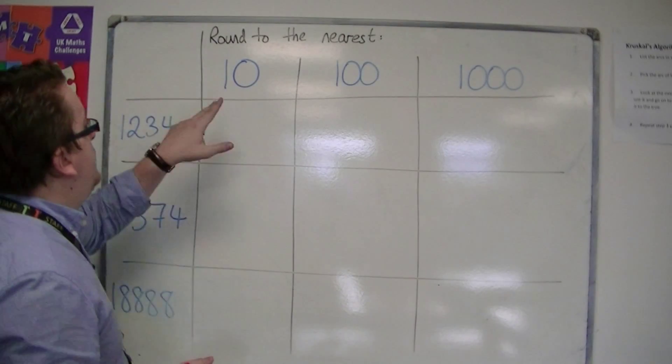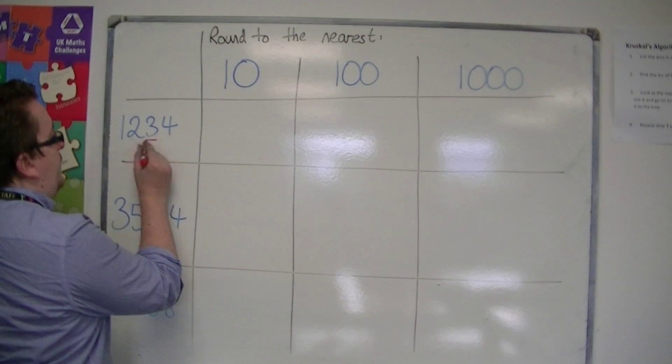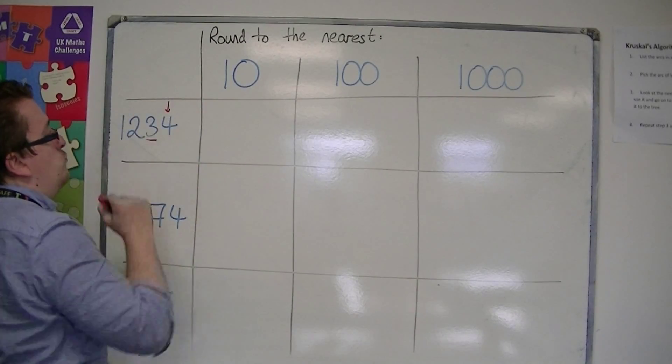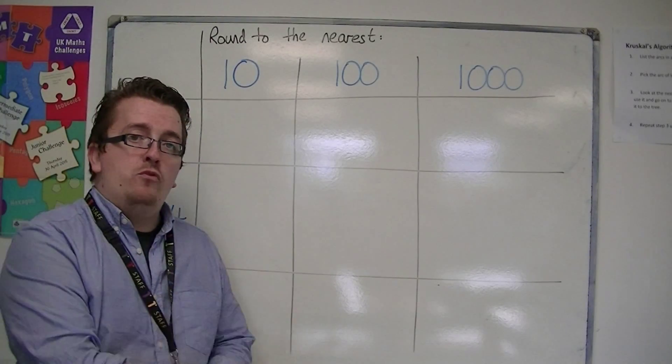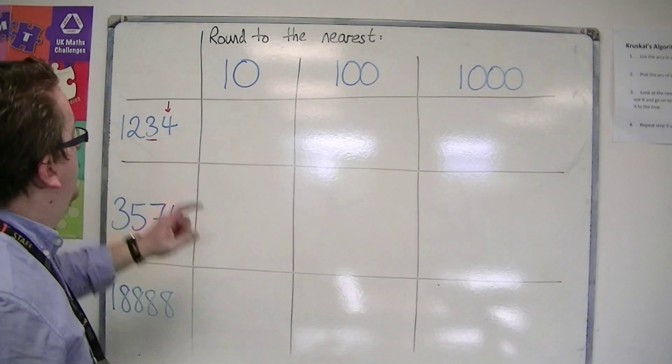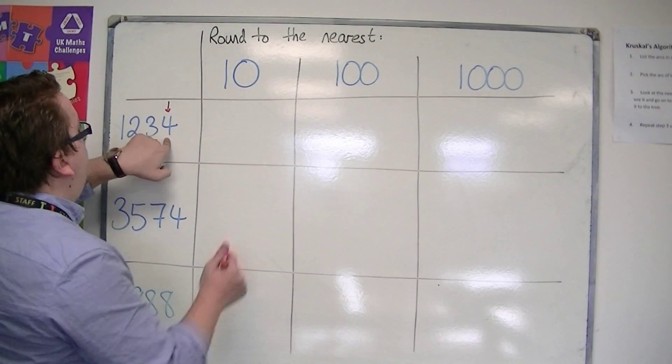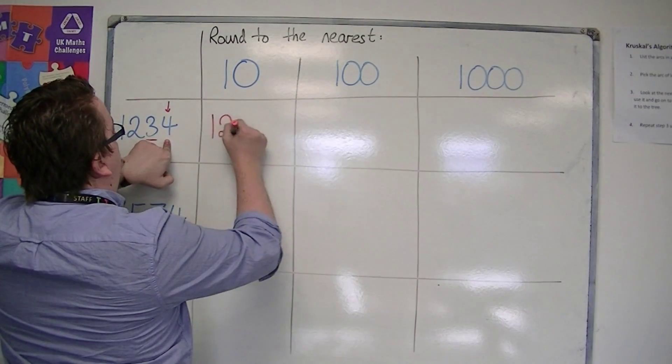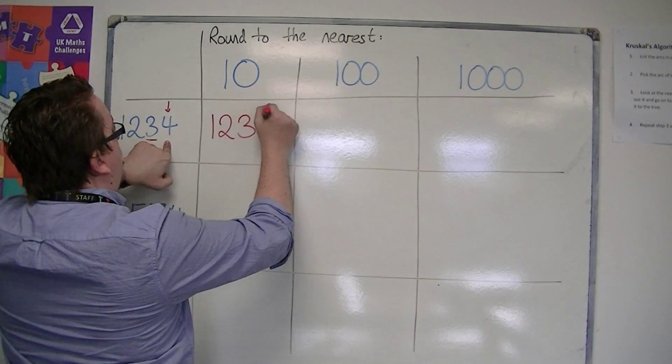Now if I'm rounding to the nearest ten, we look at the tens column, we look one to the right. If the number to the right is less than five, I round down. If it is five or more, I round up. This is telling me to round down, and so we would have 1,230.